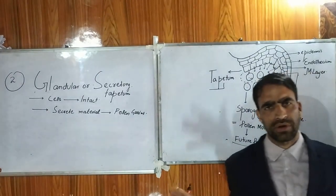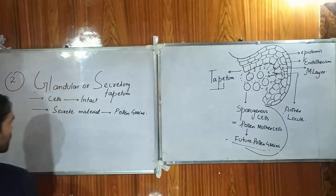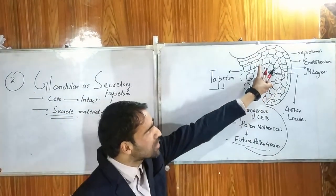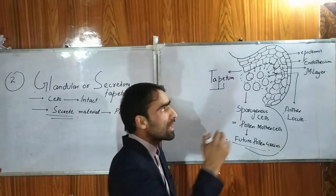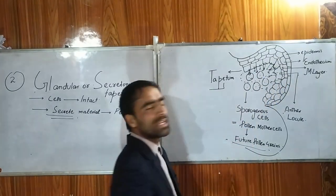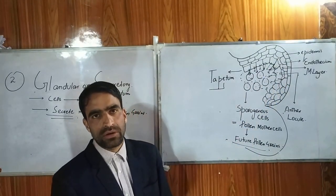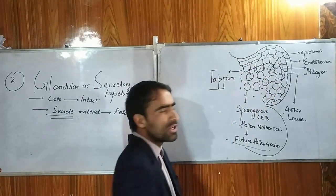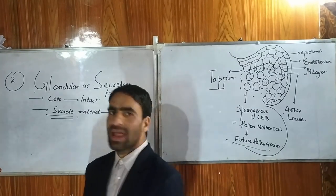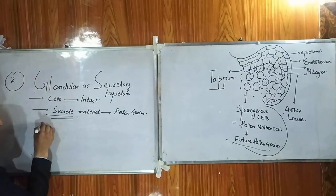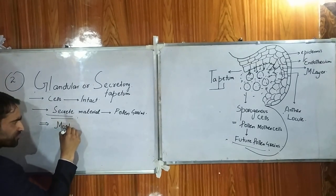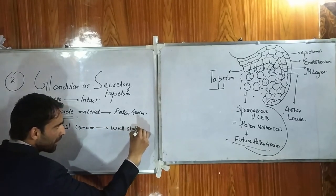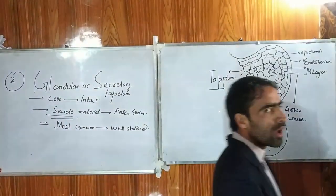In this second type, the cells don't degenerate; rather, they have the property that they secrete material towards the pollen grains. The tapetum layer directly secretes the material, behaving like a gland — secreting the enthalocule without itself degenerating. This is the second type of tapetum called the glandular type of tapetum. It is the most common type, which has been well cited and more extensively published and researched by reproductive biologists than the first type.